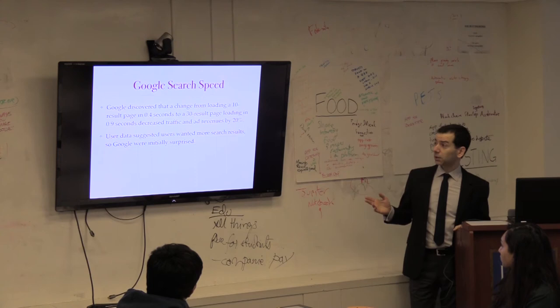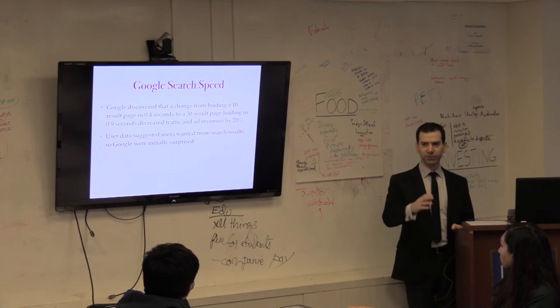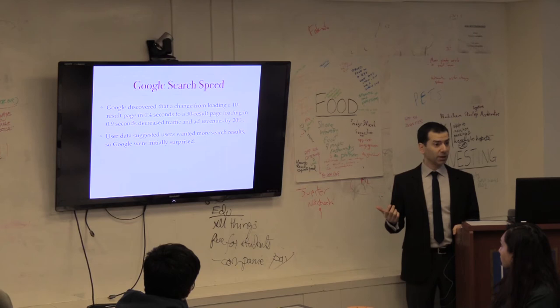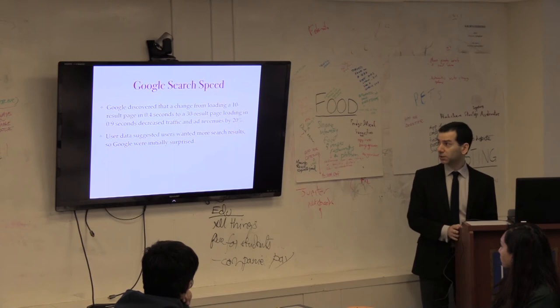Something else that was interesting with that study was that the users were able to choose how many search results they had on the results page. So they were voluntarily saying, I want 30, I want more, it's more fun to get 30 results back. But then they were actually using the site less by 20%. So sometimes it's really important to measure what users are actually doing to get the real data, so that you can make decisions based on that. Sometimes leaving it up to the users will result in them actually using the site less. So that's pretty interesting.